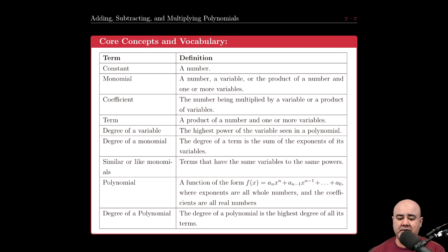So if you have 3X squared and 5X squared, those are like monomials or they're similar terms because the variable X is the same and the power squared is the same in both terms.